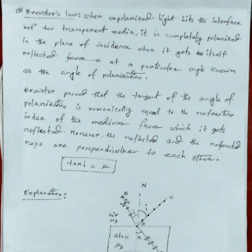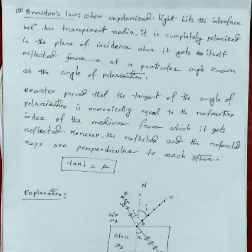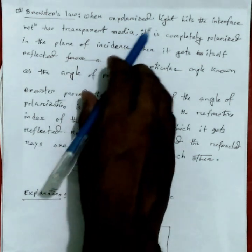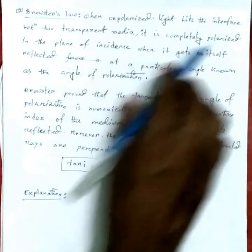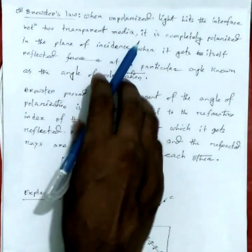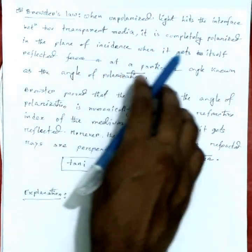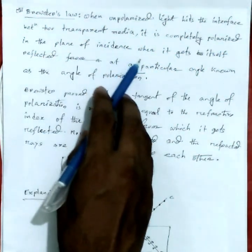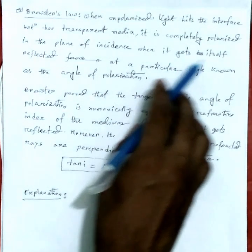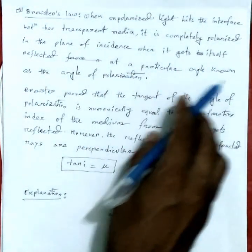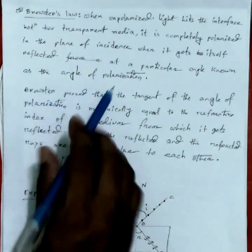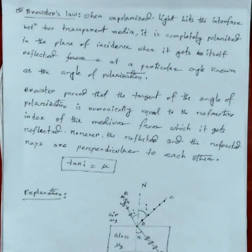Today we will see Brewster's law, the angle of polarization and its explanation. Brewster's law states that when unpolarized light hits the interface between two transparent media, it is completely polarized in the plane of incidence when it gets reflected at a particular angle known as the angle of polarization.